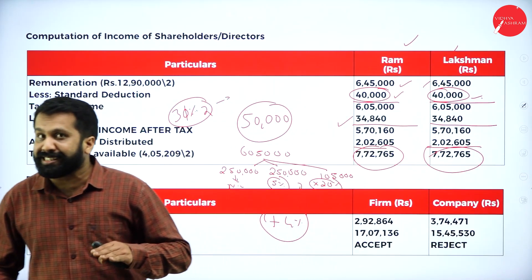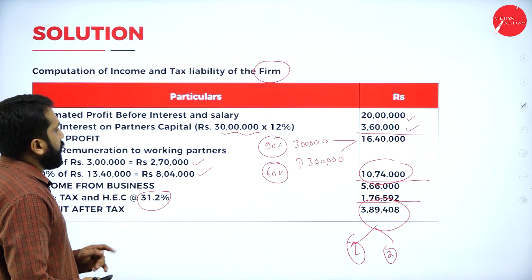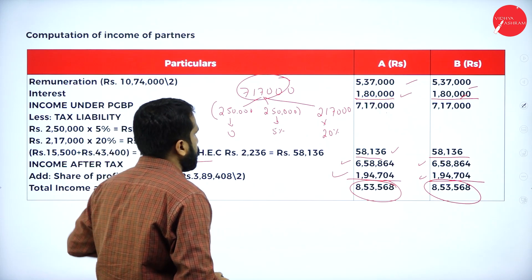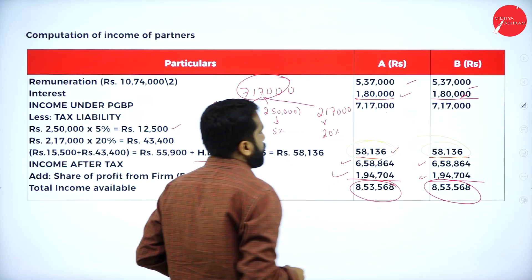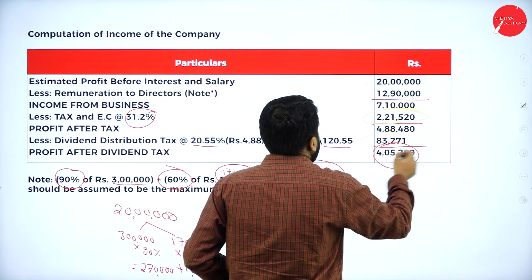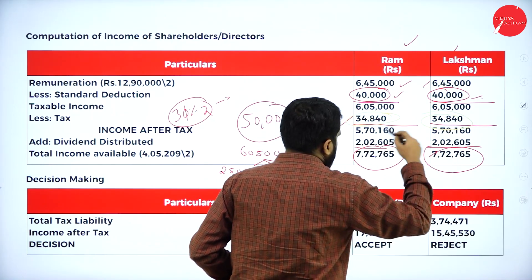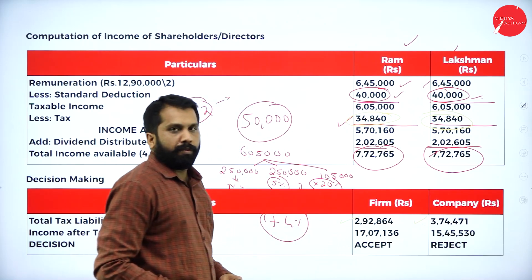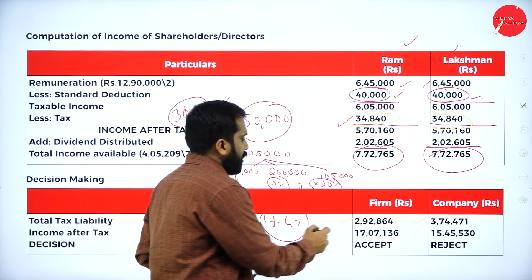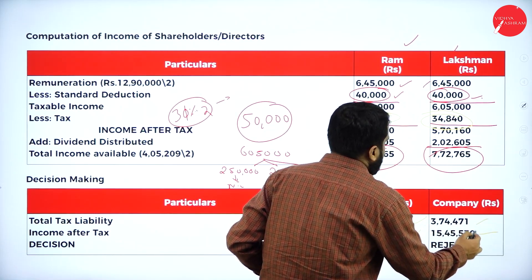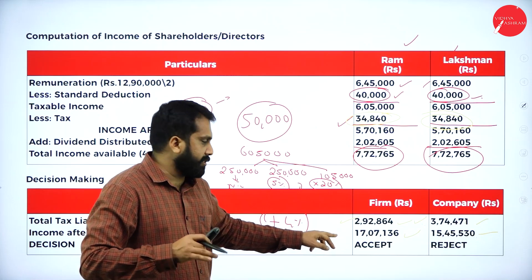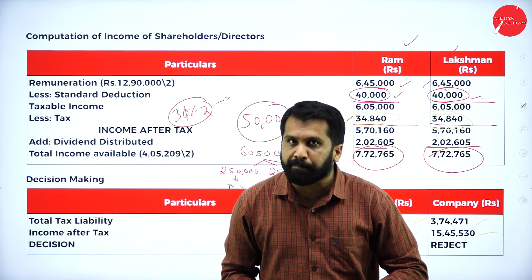Now we compare where tax is less. Under partnership: firm tax plus two partners' taxes totals 2,92,000. Under company: corporate tax plus dividend distribution tax plus two directors' taxes totals 3,71,000. Partnership tax is less at 2,92,000 versus company at 3,72,000. Therefore, go for partnership form. This is a 15-mark short question in your examination.